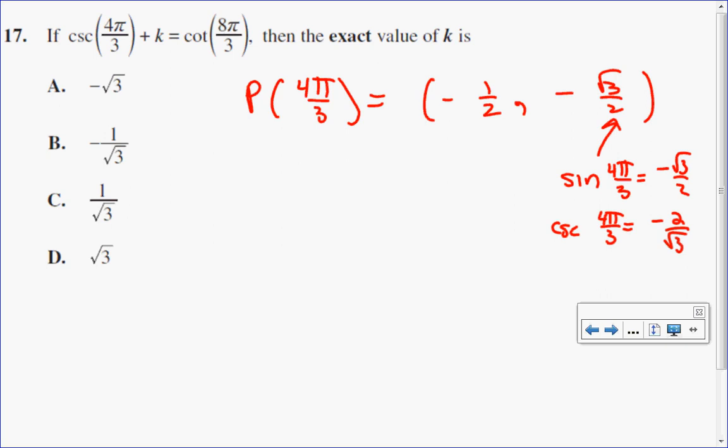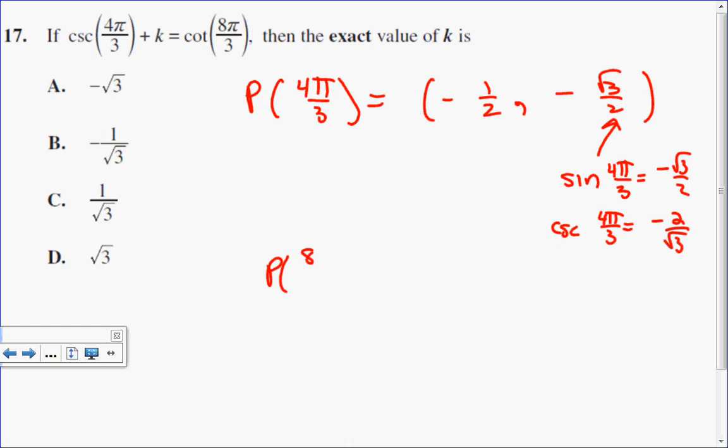Let's look at cotangent of 8π over 3. The point on the unit circle 8π over 3 has gone around the circle one time. So I want to figure out what the coterminal angle is. 8π over 3 is the same as 8π over 3 take away 2π. Now 2π is really 6π over 3. Subtract those, and I'm left with 2π over 3.